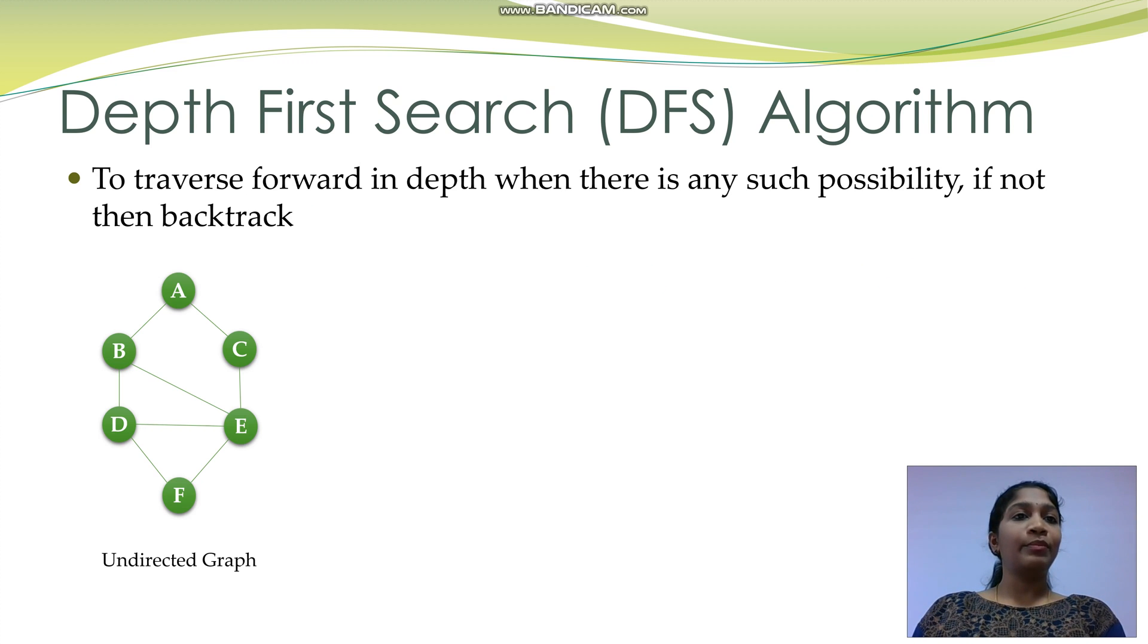Consider this example of an undirected graph. Let's start at the root vertex A. A DFS algorithm is usually implemented using a stack. So push this vertex into the stack and mark A as an already visited vertex. I show it in red.